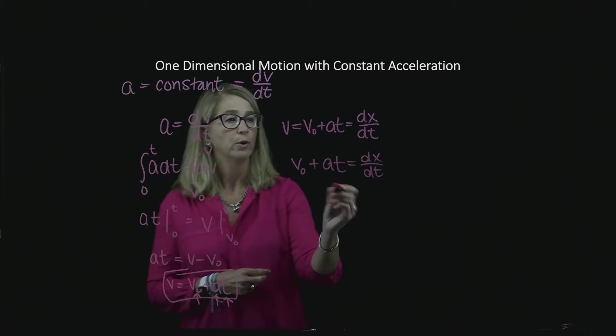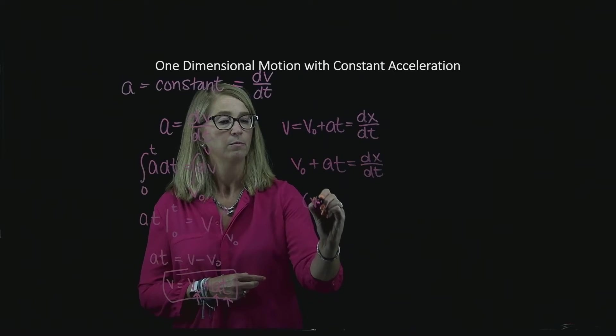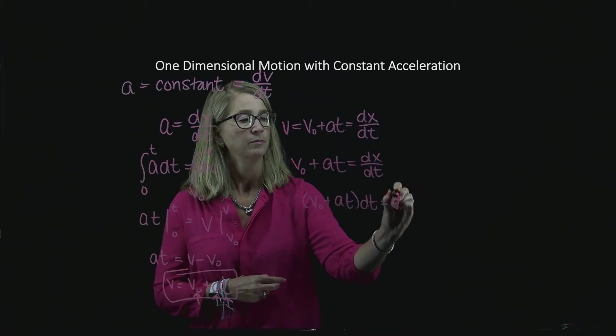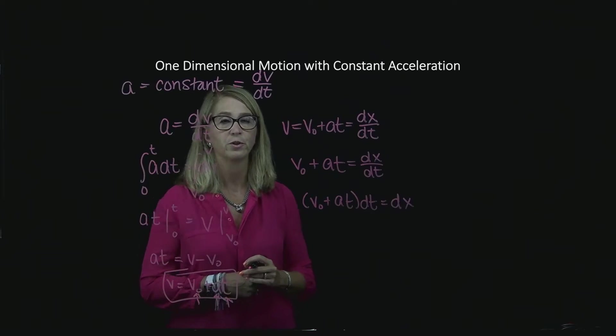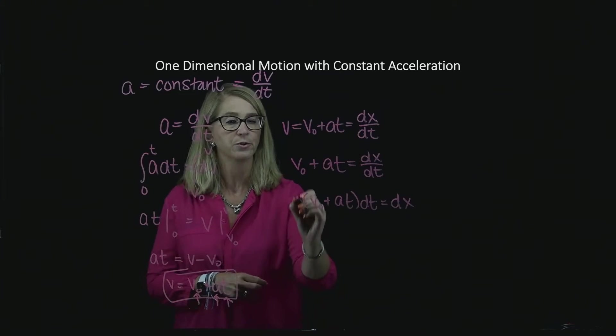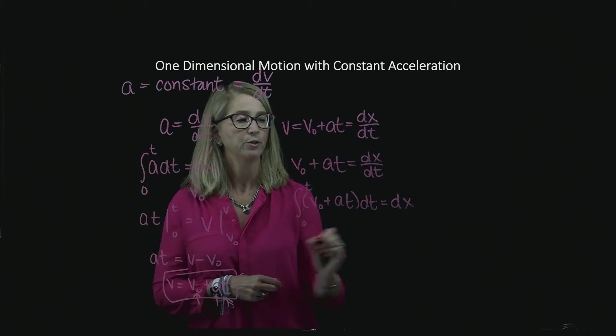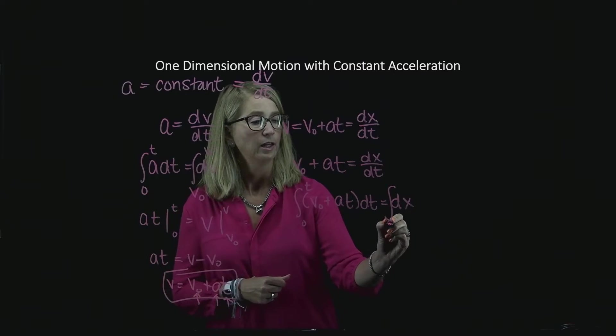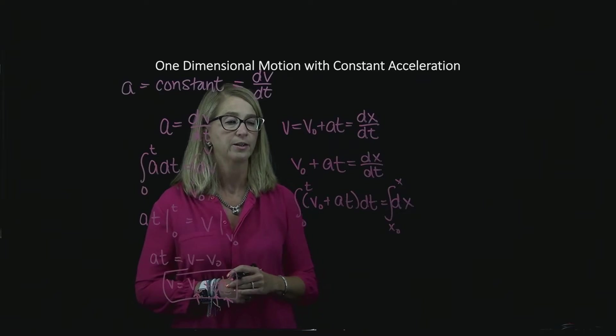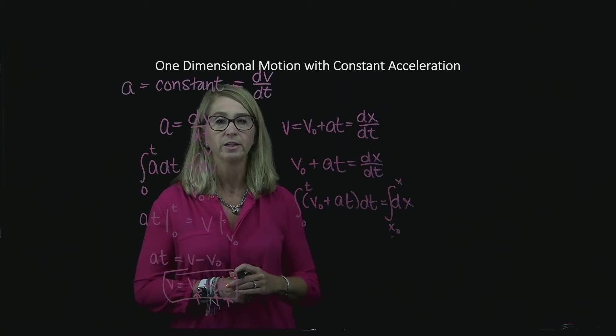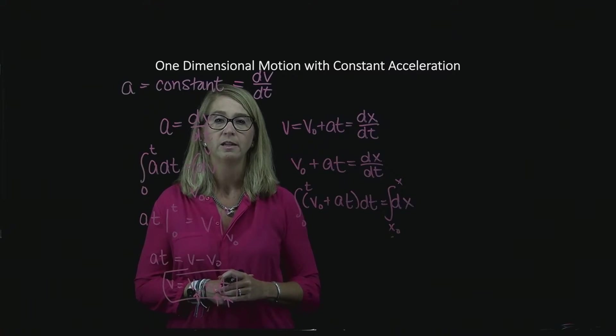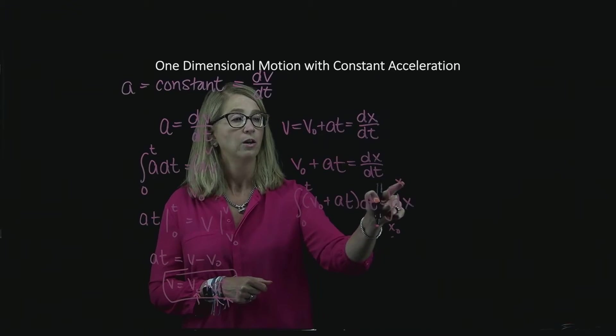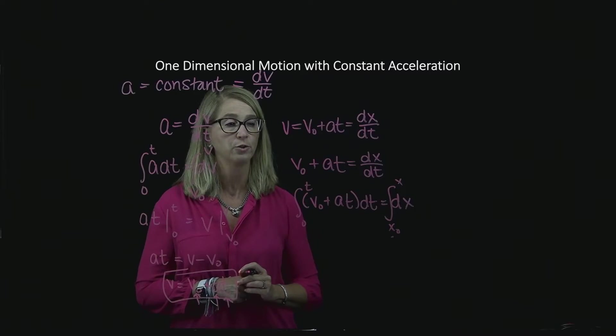So I'm going to multiply both sides by dt so that I've separated my variables. I'm going to integrate from 0 to t. And on the right hand side, I'm integrating x. And I'm going to go from x naught to some arbitrary x. Keep in mind, this is the initial position, x naught, that corresponds to the position when t is 0. So these limits on top and bottom correspond to each other.